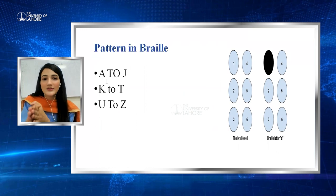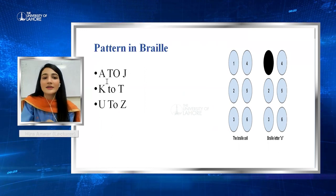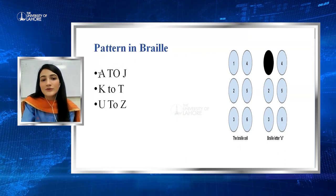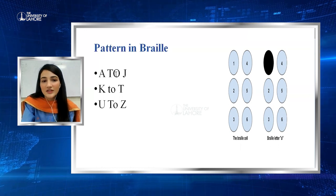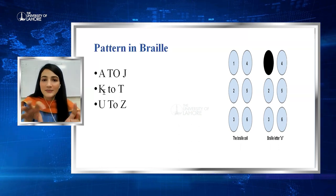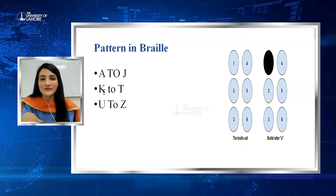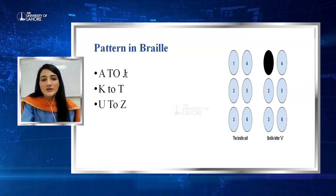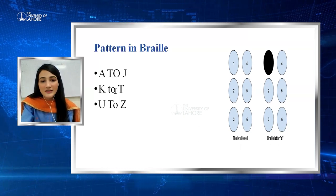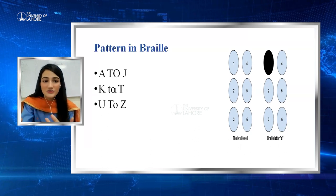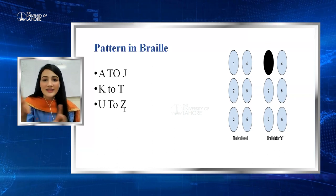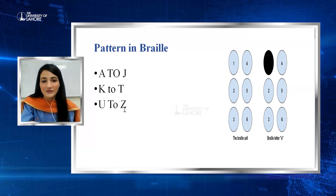If you can remember the pattern from A to J, it will help you learn the rest. The A to J pattern is the base of all the letters and alphabets. The remaining letters from K to T correspond in order to A to J, and U to Z correspond in order to A to J excluding W. W is the exception to the rest of the alphabets.